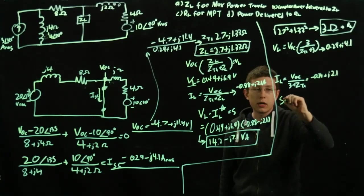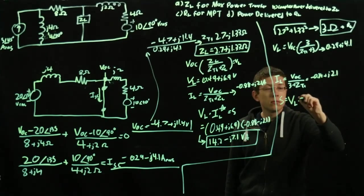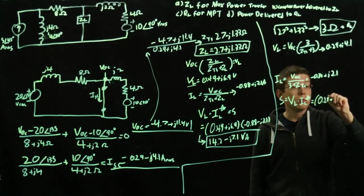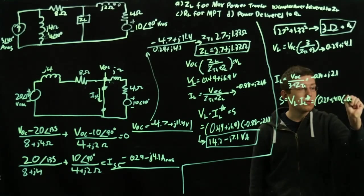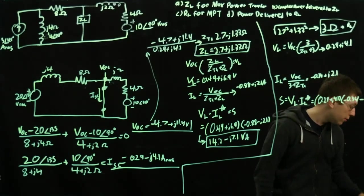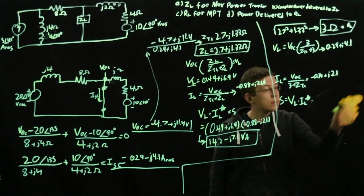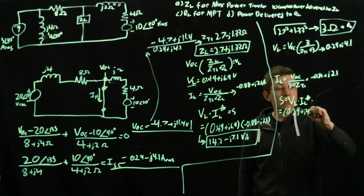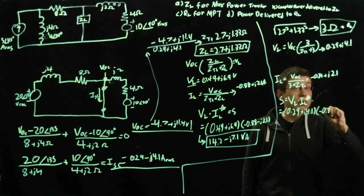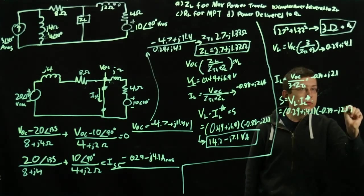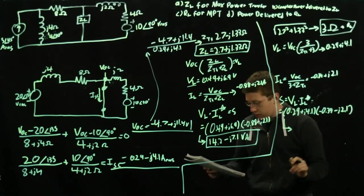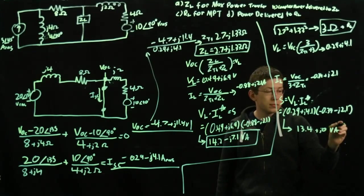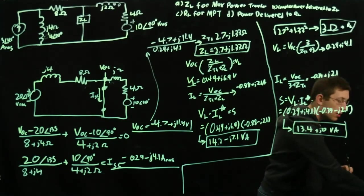So we get 0.29 plus J4.1. Taking extra special care to remember to flip our signs, because it's a very easy thing to forget. We find here that our power becomes 13.4 plus J0 volt amperes. And so that's this equation solved.